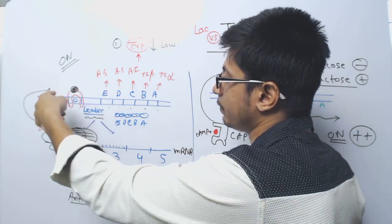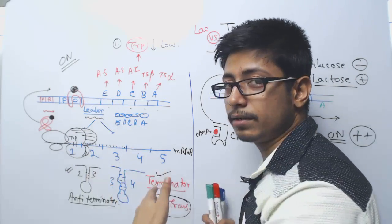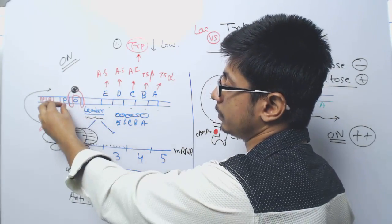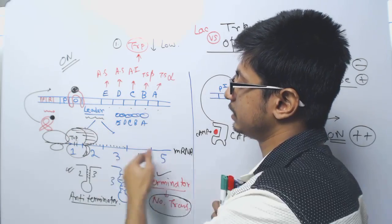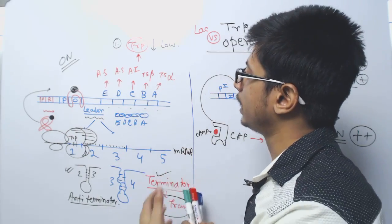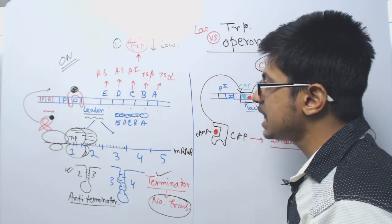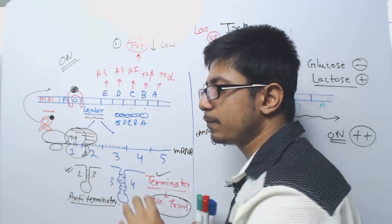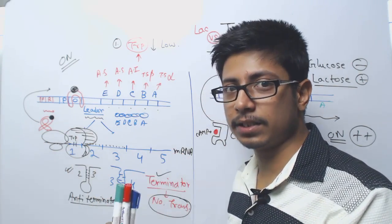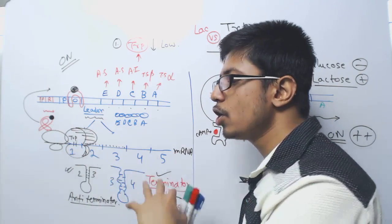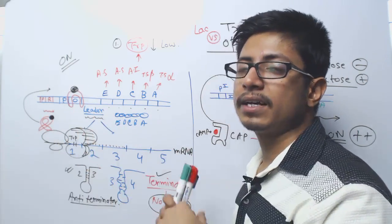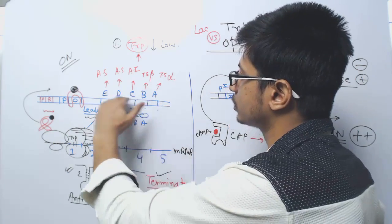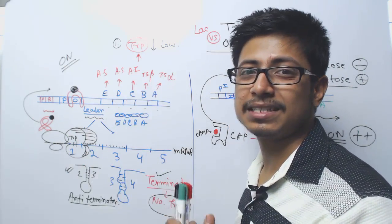Since the repressor is inactive, it cannot bind to the operator. The operator is free, and the promoter is also free, so RNA polymerase can bind to the promoter, transcribe the genes, translation occurs, and tryptophan is synthesized. Now, if there is enough tryptophan concentration inside the cell, tryptophan attaches to the repressor, modifies its structure, and activates it. The active repressor binds to the operator, blocking it, so even though the promoter is free, RNA polymerase cannot transcribe the genes. This results in no transcription, no translation, and tryptophan synthesis is blocked.